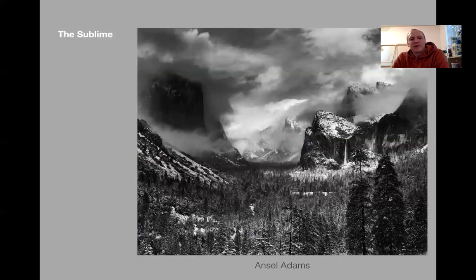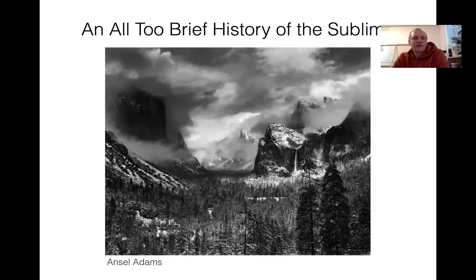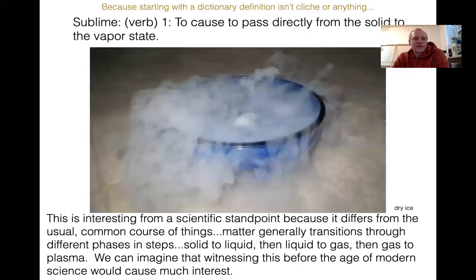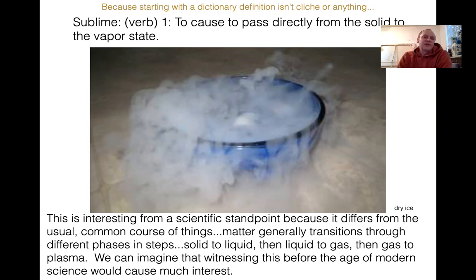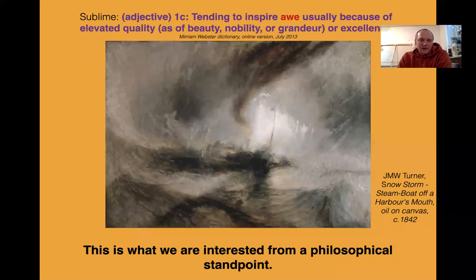I want to take just a minute to talk about the sublime. You may be familiar with Ansel Adams — just a few slides, a tangent into the sublime. An all-too-brief history of the sublime. The verb is to cause something to pass directly from the solid state to the vapor state — that's sublimation. It's interesting from a scientific standpoint because it differs from the usual course of things. Matter generally translates through three different phases: solid to liquid, then liquid to gas, then gas to plasma.